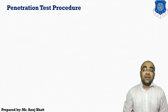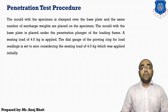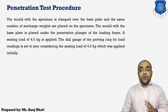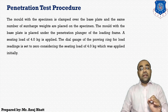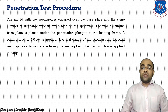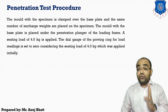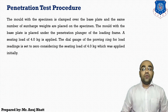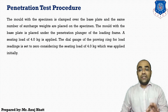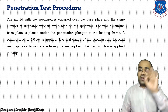The test procedure begins with the mold and specimen clamped over the base plate, and the appropriate surcharge weights placed on the specimen. The mold with base plate is placed under the penetration plunger and a seating load of 4 kg is applied to the specimen. The dial gauge of the proving ring for load reading is set to zero at the initial stage, considering this seating load of 4 kg.